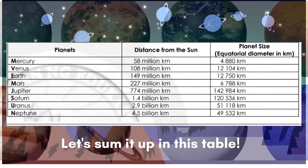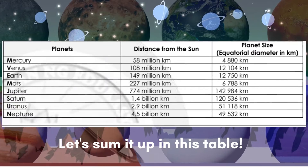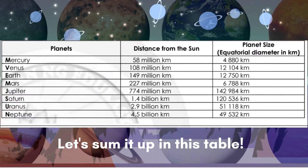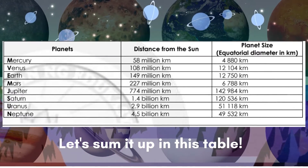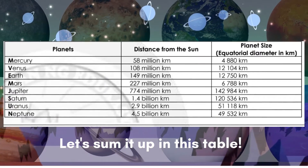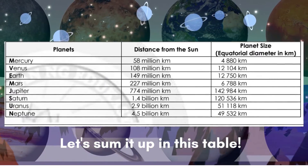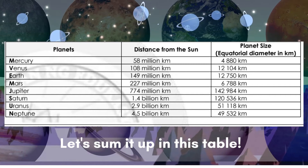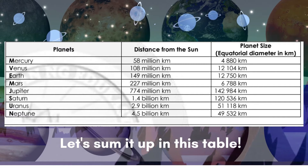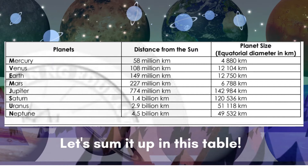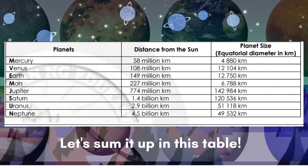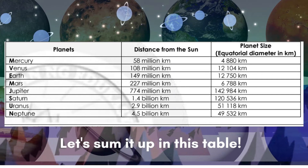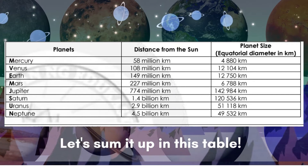To sum it up, let us have the planets Mercury to Neptune with their distance from the sun and planet size. This is based on our Leap in Science for Quarter 4, Week 7 to 8. Please take note of this.